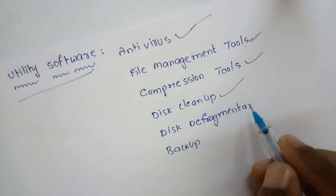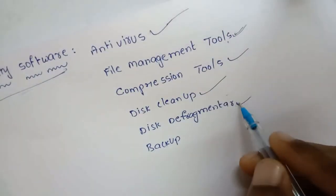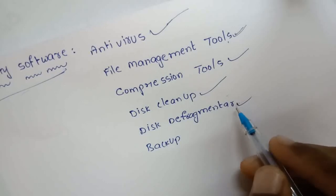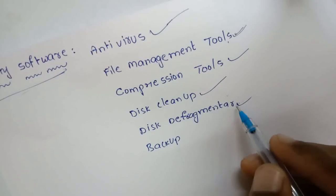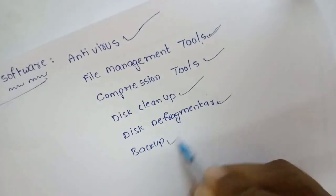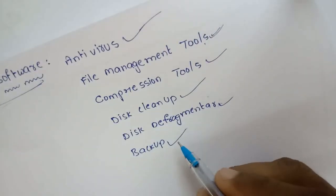Next is disk defragmenter. Disk defragmenter is a disk management utility that increases file access speeds by rearranging fragmented files into contiguous locations. Large files are broken down into fragments and may be stored in non-contiguous locations if contiguous ones are not available. When such files are accessed, the speed is slow due to fragmentation. The disk defragmenter utility scans the disk and tries to assemble file fragments so that they may be stored in contiguous locations.